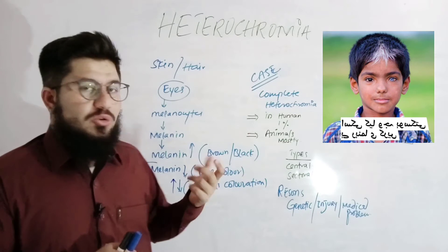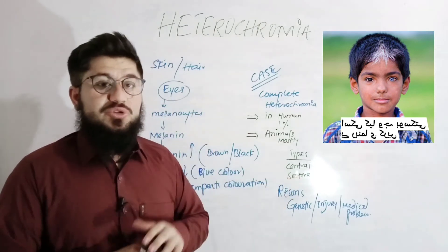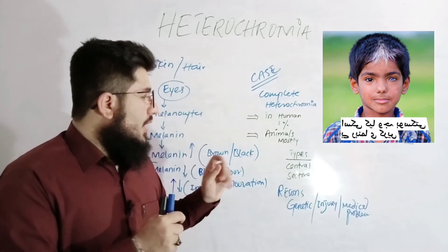In central heterochromia, the central portion of the eye is different from the marginal portion. Whereas in sectoral heterochromia, just a single small portion of the eye is different from the entire color.